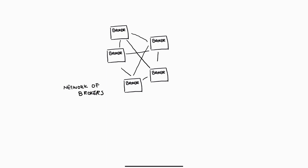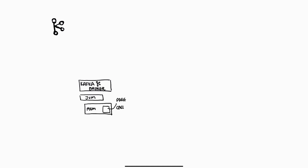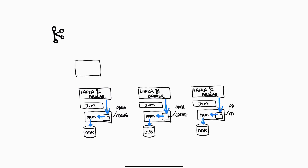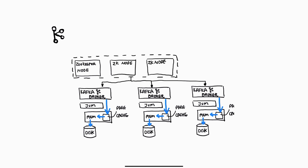Kafka simply takes the event data and writes them directly to the operating system's memory cache. The data is already in binary format that the broker can store directly without needing to process the payload. And to make it scalable, it also introduces a set of ZooKeeper nodes so you can manage centralized configurations and also help with replication and scaling.